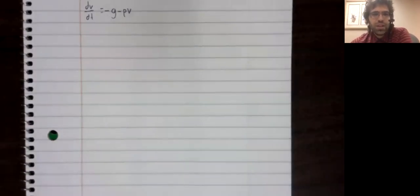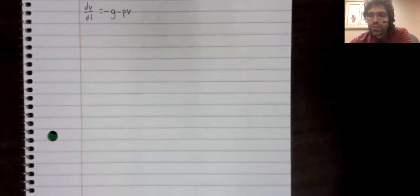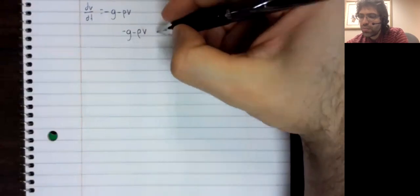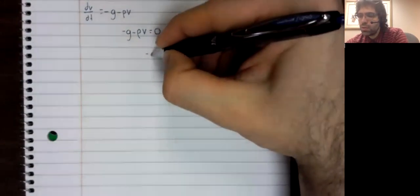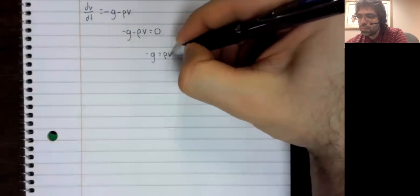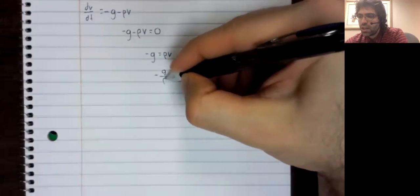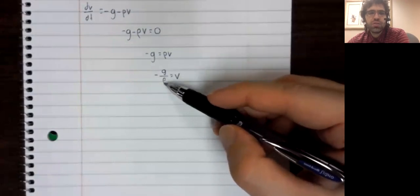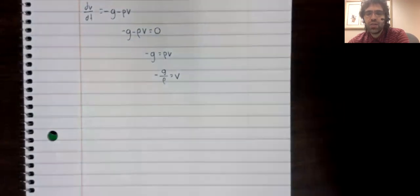The first question in relation to that is whether there are any fixed points. We will set the derivative equal to zero and we find that there is a fixed point. The gravitational constant over the drag coefficient with a negative sign in front.